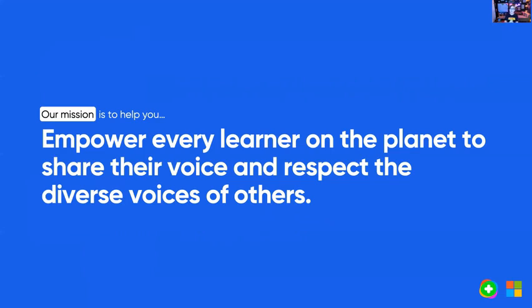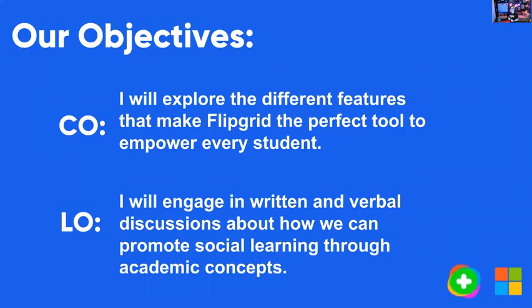I'm going to show you all the tools. We're going to talk about the content objective and the language objective for today's class. Our content objective is to explore the different features that make Flipgrid the perfect tool to empower every student. Our language objective is: I will engage in written and verbal discussions about how we can promote social learning through academic concepts. The CO is the what — what am I going to learn — and the LO is how, using all of the language domains, I'm going to accomplish my CO, which is language acquisition.